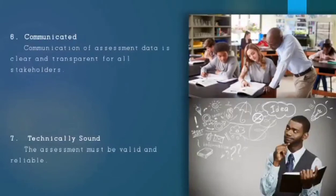The next one is technically sound. The assessment must be valid and reliable. Adjustments and accommodations are made in the assessment process to meet students' needs and fairness. When you speak of valid, it means it measures what it intends to measure. It measures the stated objectives.